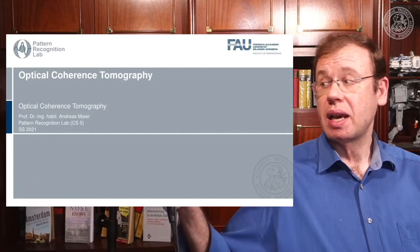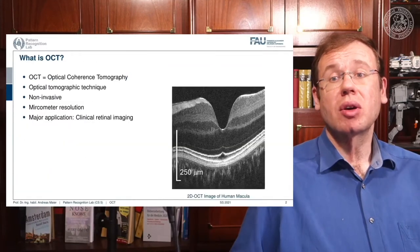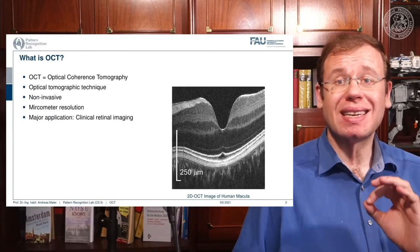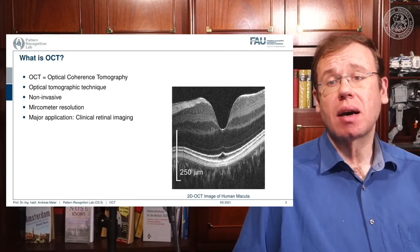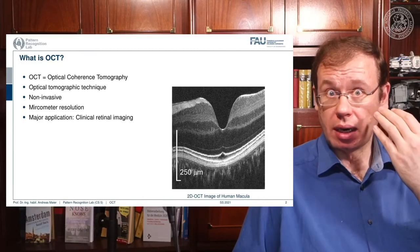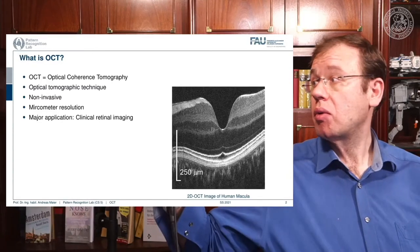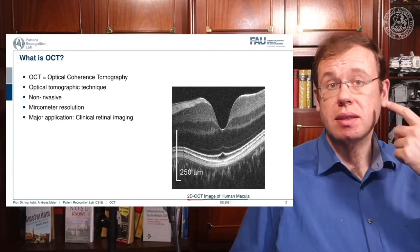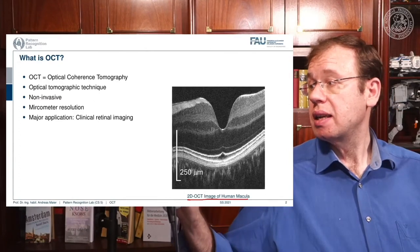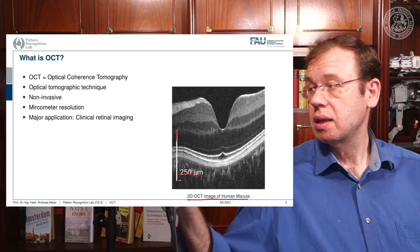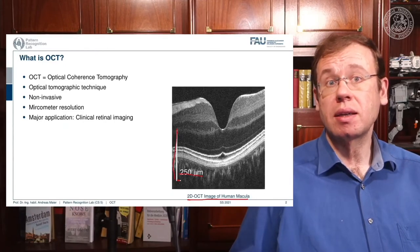Optical coherence tomography — OCT — is a tomographic technique. We produce slice images, it's non-invasive, and it operates at micrometer resolution. The major applications are clinical retinal imaging in ophthalmology. Here you can see a 2D OCT image of the human macula — the background of the eye. The 250 micrometer resolution is anisotropic, with scales much longer along the y direction than the x direction.